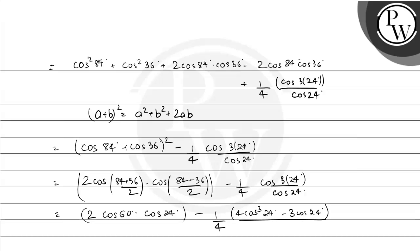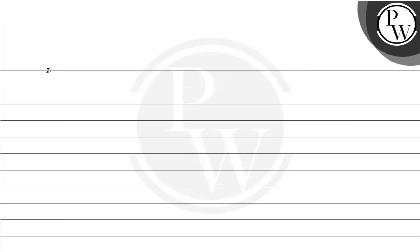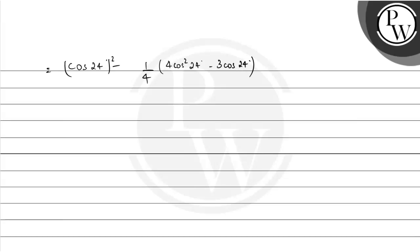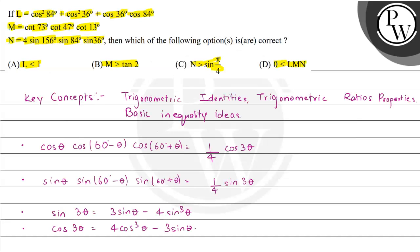This is again using the identity we had stated. This leaves us with cos of 24 degrees minus 1 upon 4 times of 4 cos squared 24 degrees minus 3 cos of 24 degrees, and this is cos squared 24 degrees whole squared, because cos 60 is half so 2 cos 60 becomes 1. Simplifying the second term we obtain minus cos squared 24 degree plus 3 upon 4. Hence this gives us L equal to 3 upon 4. Therefore L is lesser than 1, so option 1 is true.